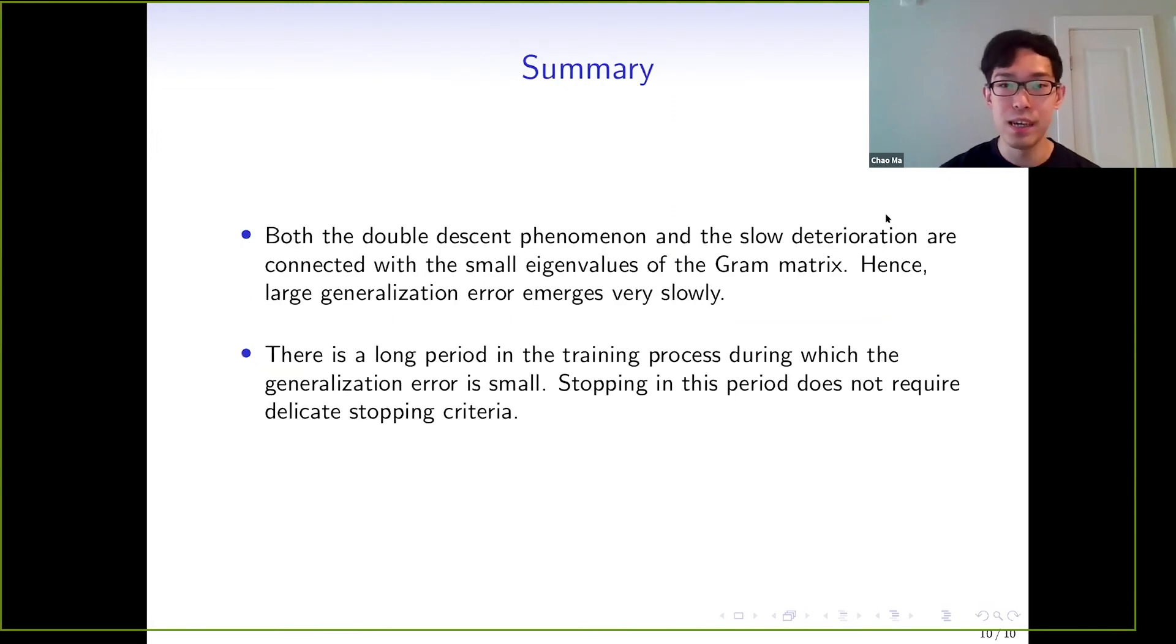Finally, as a summary, in this work we describe and analyze the slow deterioration phenomenon. Both the double descent phenomenon and the slow deterioration are connected with small eigenvalues of the Gram matrix. We show that large generalization error emerges very slowly. Secondly, this phenomenon shows there is a long period of time in the training process during which the generalization error is small. So stopping in this period does not require a delicate stopping criteria, and the double descent is not something that needs to be worried too much in practice. Thank you. That is my presentation today.